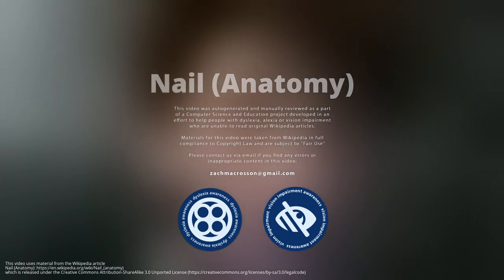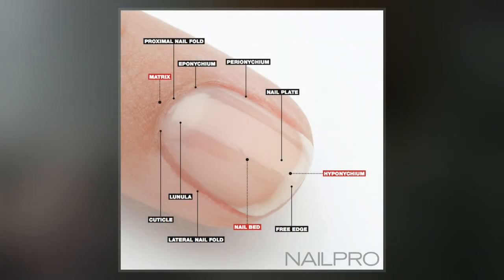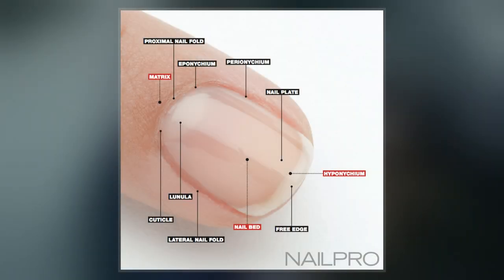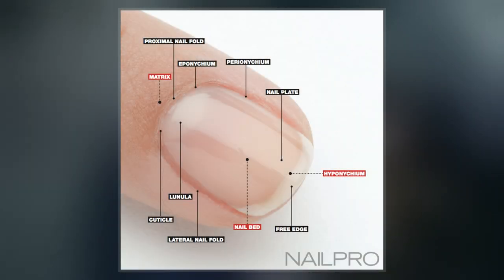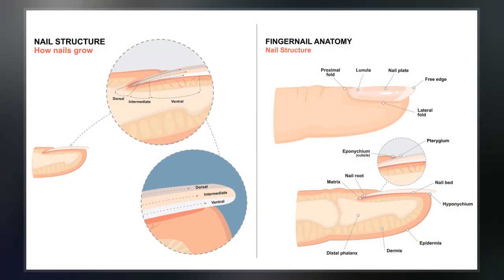A nail is a horn-like keratinous envelope covering the tips of the fingers and toes in most primates. Nails evolved from claws found in other animals. Fingernails and toenails are made of a tough protective protein called alpha-keratin, which is found in the hooves, hair, claws and horns of vertebrates.